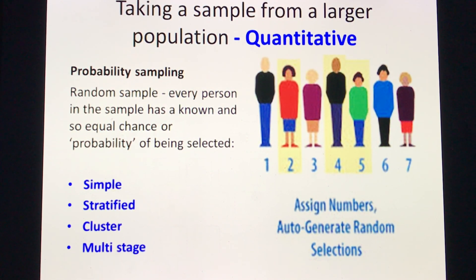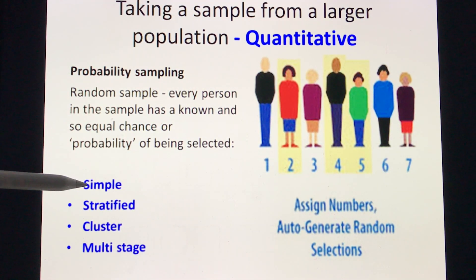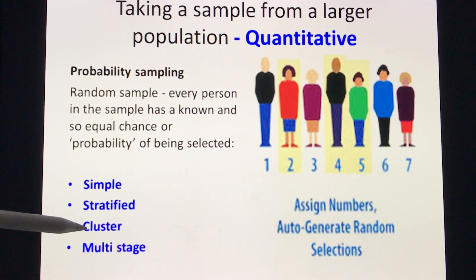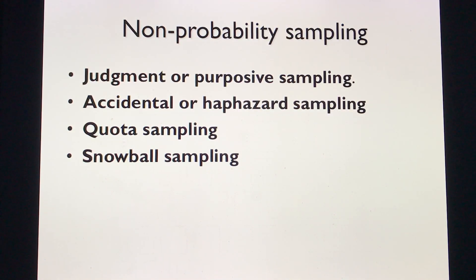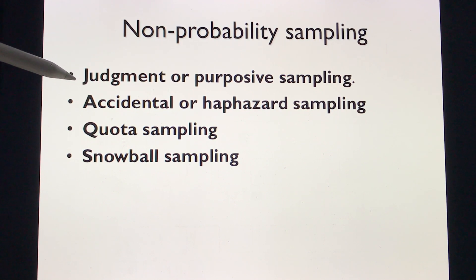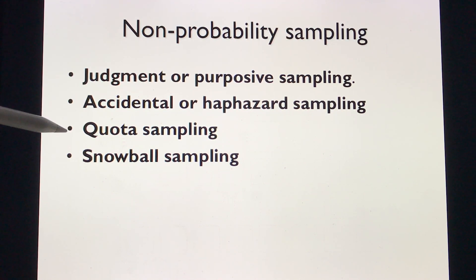Examples of probability sampling would be simple sampling, stratified probability sampling, cluster probability sampling, and multi-stage probability sampling. For non-probability sampling, we have judgment or purposive sampling, accidental or haphazard sampling, quota sampling, and snowball sampling.